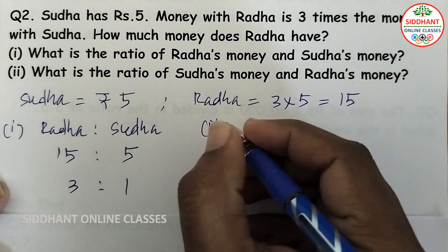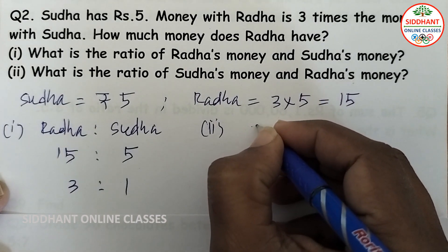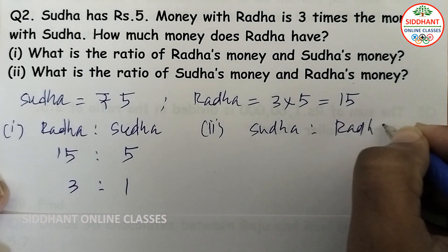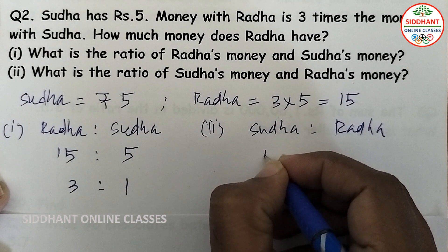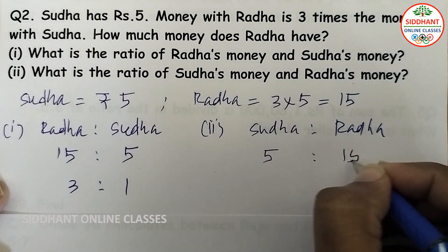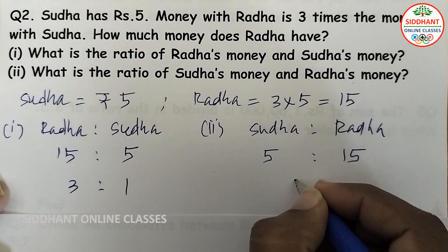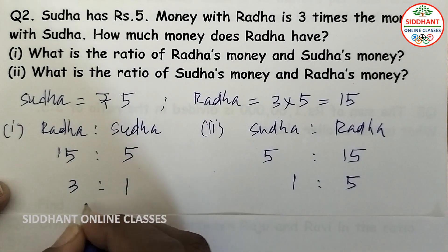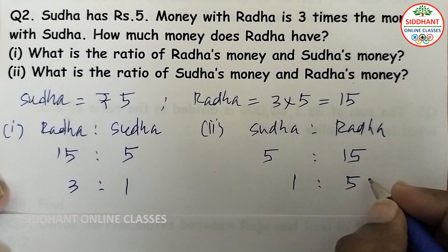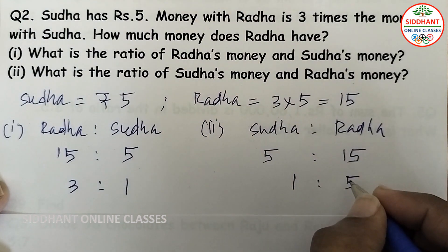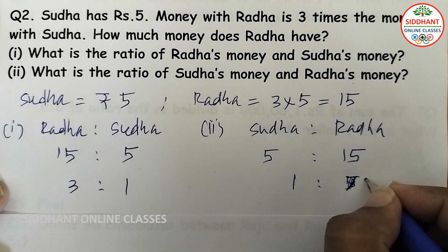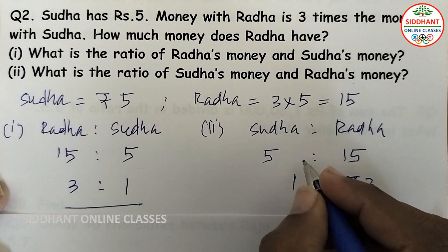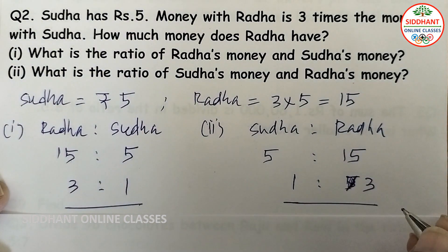What is the ratio of Sudha and Radha? Sudha has rupees 5 and Radha has 15. When you divide by 5, you get 1 is to 3. So the ratio of Sudha and Radha is 1 is to 3.